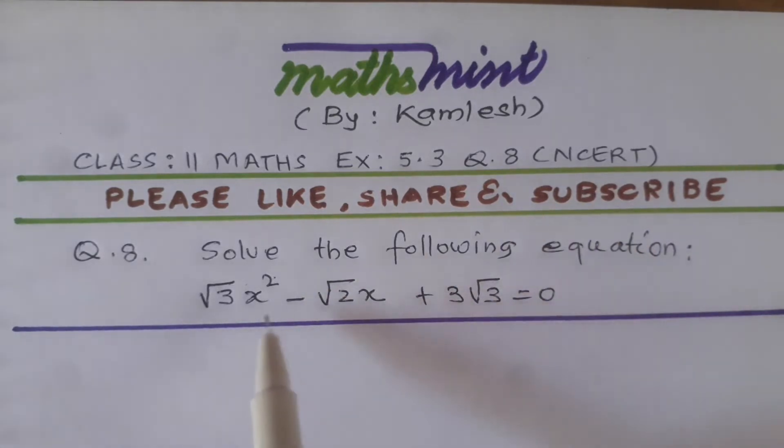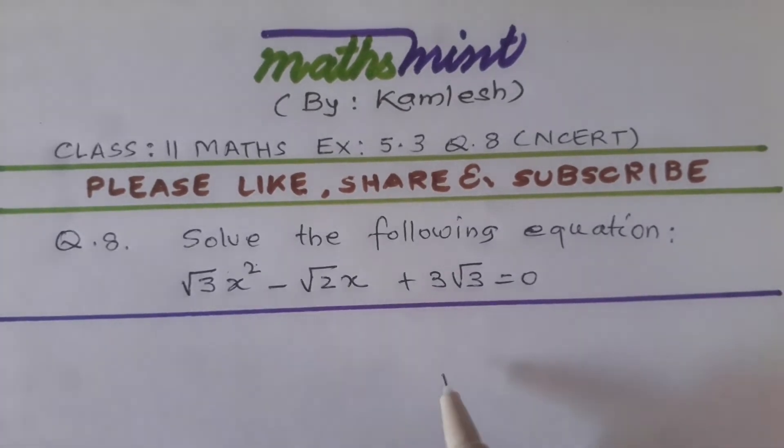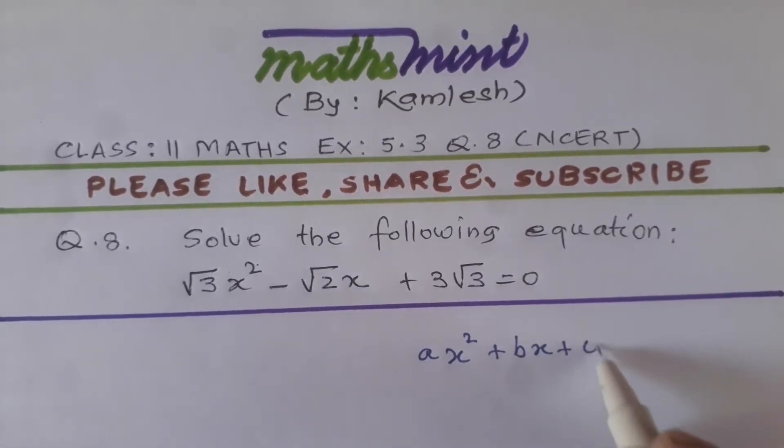Question is solve the following equation: root 3 x squared minus root 2 x plus 3 root 3 equal to 0. This is the quadratic equation and we know that the form of quadratic equation is A x squared plus B x plus C equal to 0.